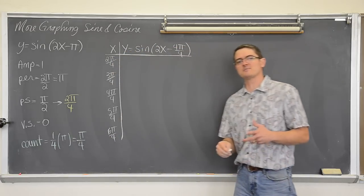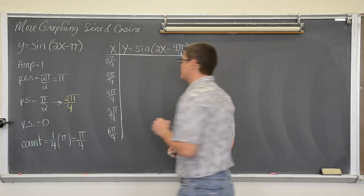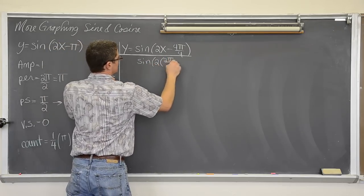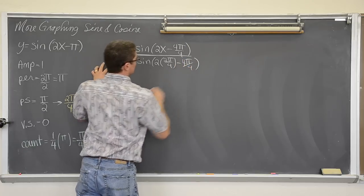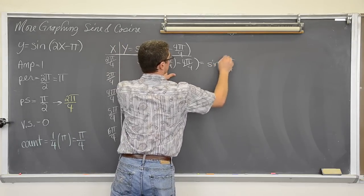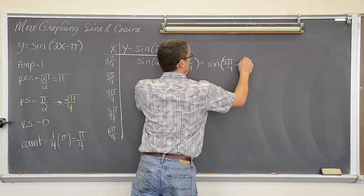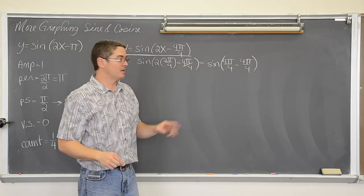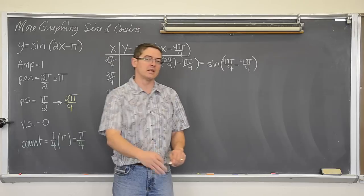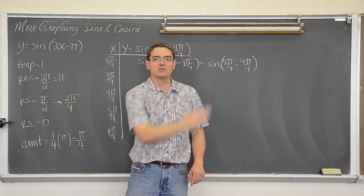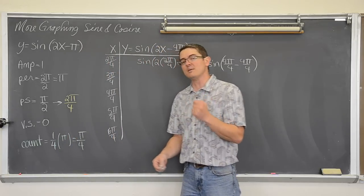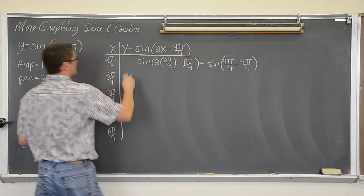I am going to show all the steps in one of these lines, then do mental math after. So we do sine of 2 times 2π over 4 minus 4π over 4. Two times 2 is 4, so that becomes sine of 4π over 4 minus 4π over 4, which comes out to be zero. The sine of zero is zero. If you start with the phase shift and count by a quarter of the period, doing your fractional work correctly, you should be getting quadrantal angles. If the trig function does not give you an answer of one, zero, or negative one, you have done something wrong.